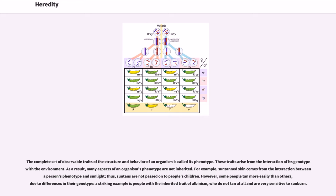The complete set of observable traits of the structure and behavior of an organism is called its phenotype. These traits arise from the interaction of its genotype with the environment.